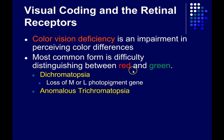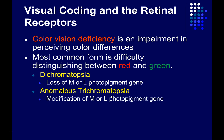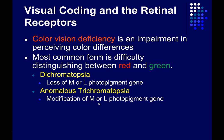Another cause of difficulty distinguishing between reds and greens is called anomalous trichromatopsia. In this case, the mutation isn't so bad that you completely lose the medium or long wavelength cones, but rather they're shifted around so that the medium and long wavelength cones have response properties that are more similar to one another. And so it becomes harder to figure out what wavelength of light you're seeing out in the medium to long wavelength part of the spectrum.